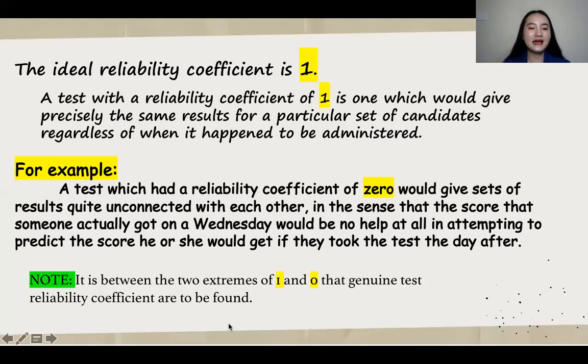For instance, a test which had a reliability coefficient of zero would give sets of results quite unconnected with each other. So in that sense, the scores that someone actually got, for example, on one day, would be no help at all in attempting to predict the score he or she would get if they took the test the day after.